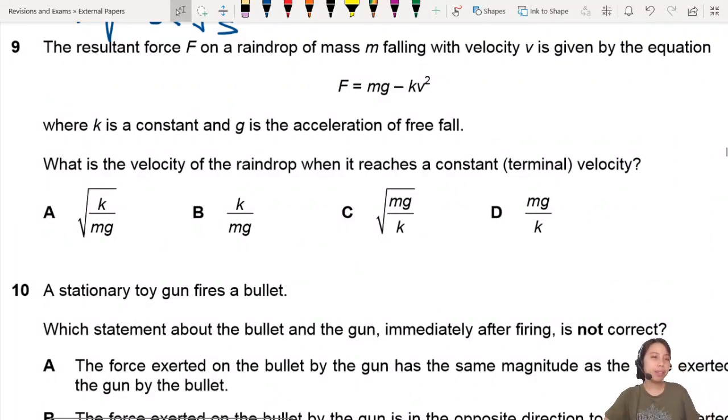Question 9. We are going to chapter 5 and 4 now. The resultant force on a raindrop falling with velocity is given by the equation F = mg - kv². Where k is a constant and g is the acceleration of free fall. What's the velocity of the raindrop when it reaches a constant terminal velocity?